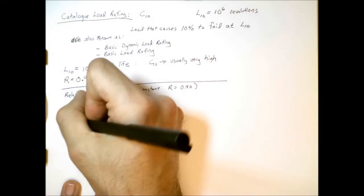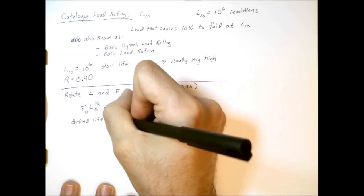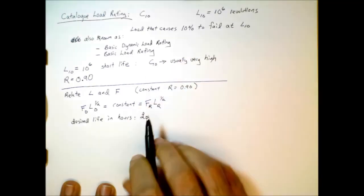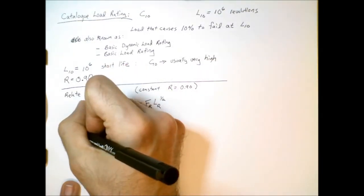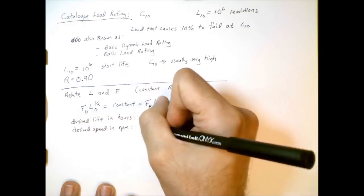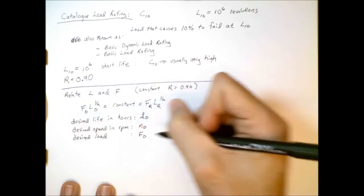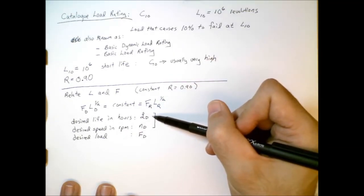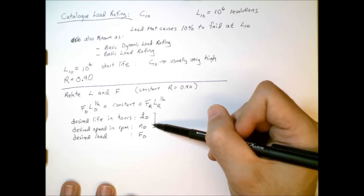So, for example, suppose we know the desired life in hours and the symbol used here to depict that is this script L sub D. Along with that, we need to know the desired speed in rotations per minute. And suppose we also know what the desired load is. Now keep in mind, if we know the desired life in hours and the rotational speed, we can use this information to get the desired life in revolutions.